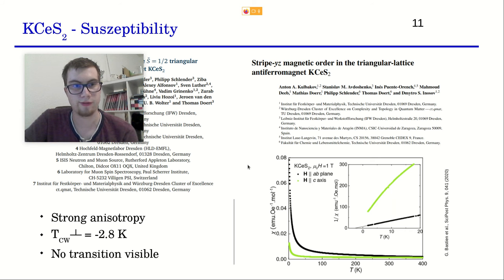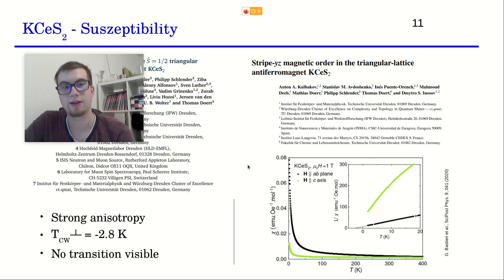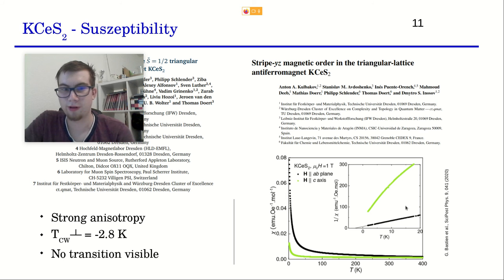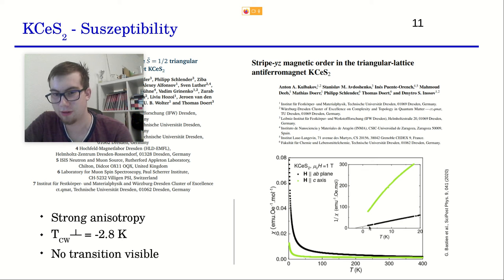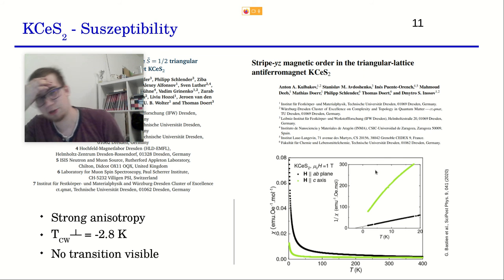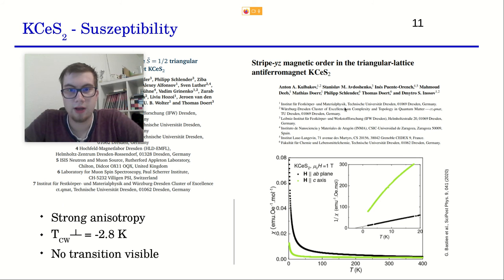Next is potassium cerium sulfide (KCeS₂), which has an antiferromagnetic ground state. They first did an AC susceptibility measurement but didn't find any transition initially because the transition is at a very low temperature. So you have to be careful — if you only measure down to 1–2 K you might think there's no transition and possibly a quantum spin liquid, but the transition is just below that range. You can also see a very high anisotropy between the two field directions, which is a special feature of this material.